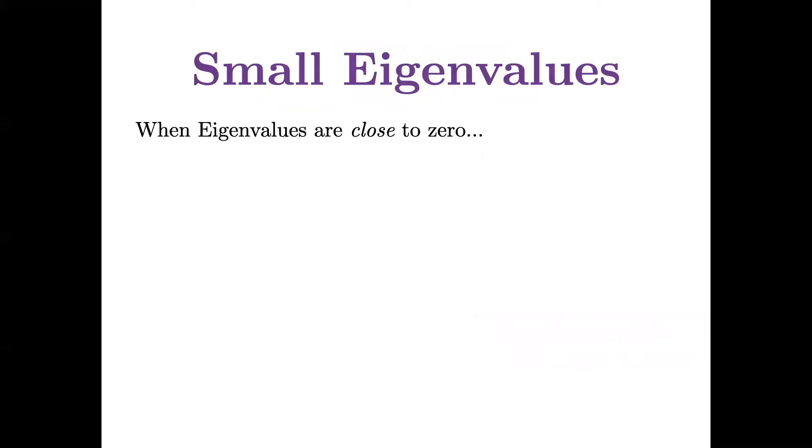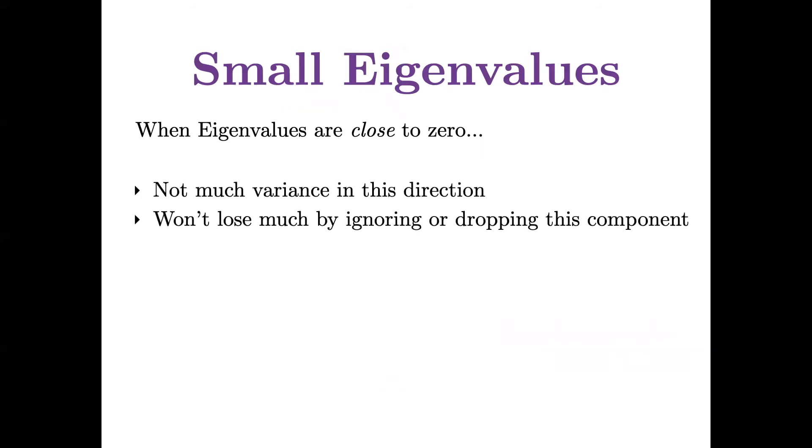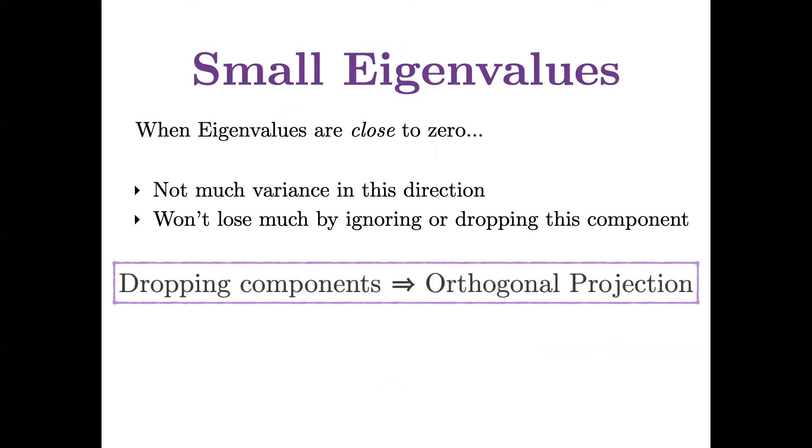And when eigenvalues are close to zero, it means there's not much variance in that direction. And so you won't lose much by ignoring or dropping this component. Dropping components implies an orthogonal projection onto a subspace that's the span of the principal components. And that is how we get to dimension reduction.